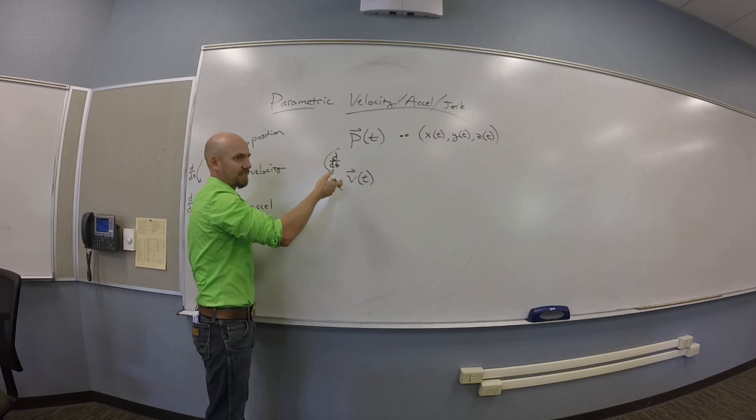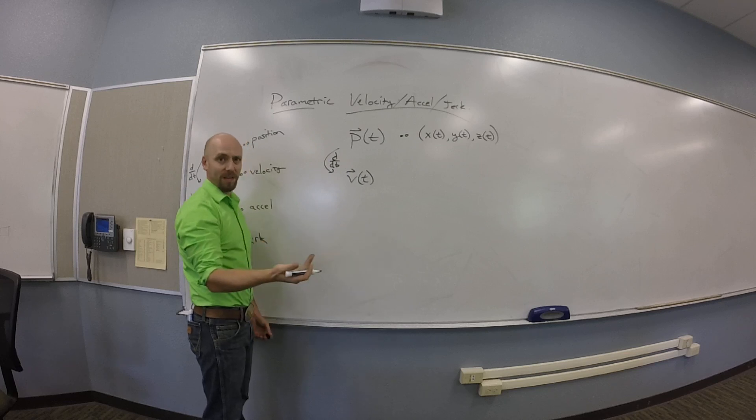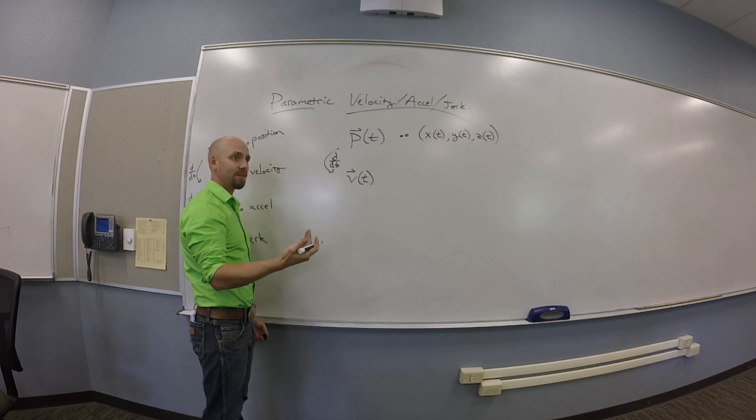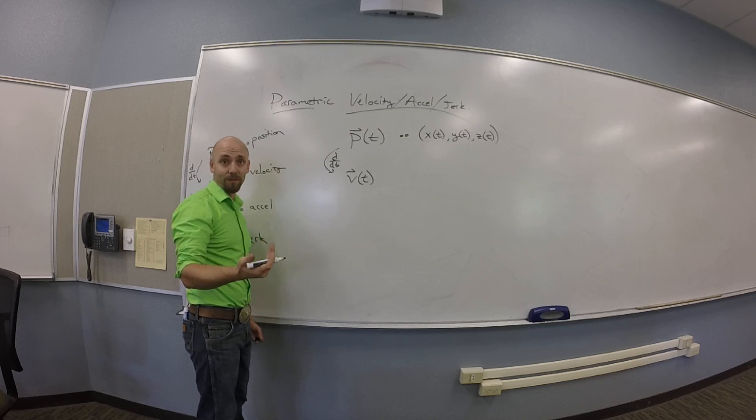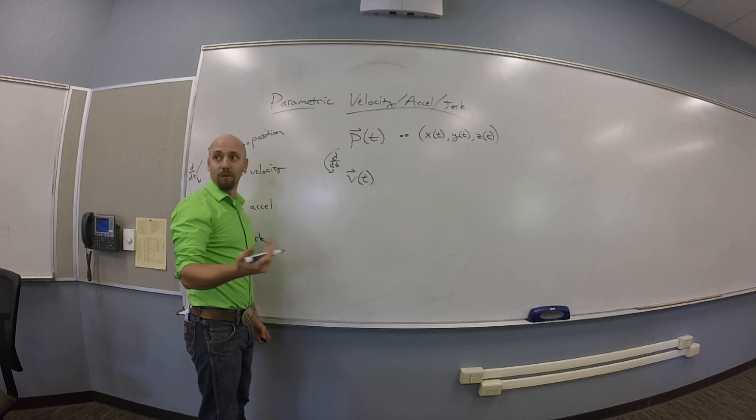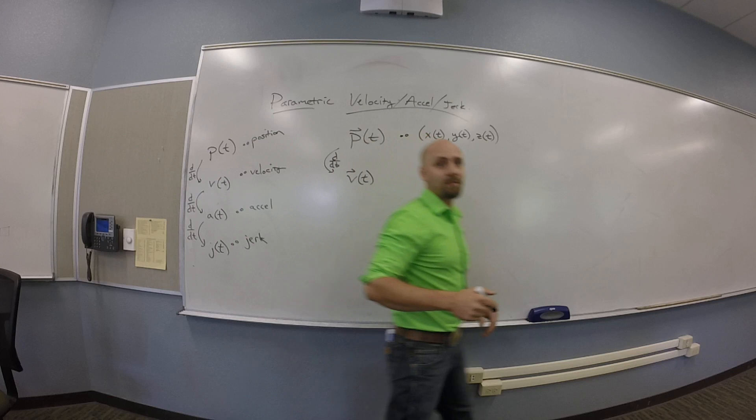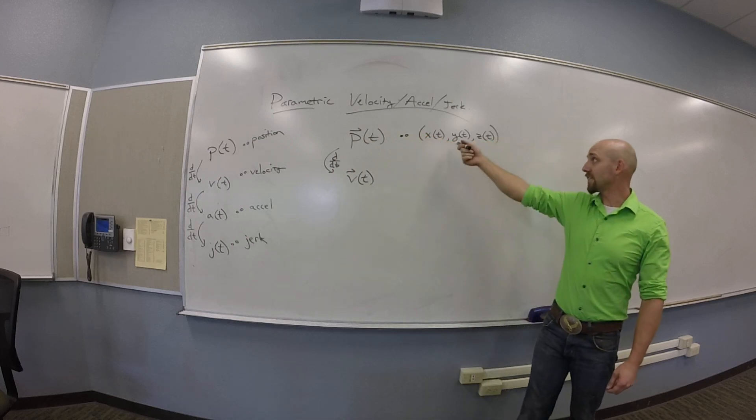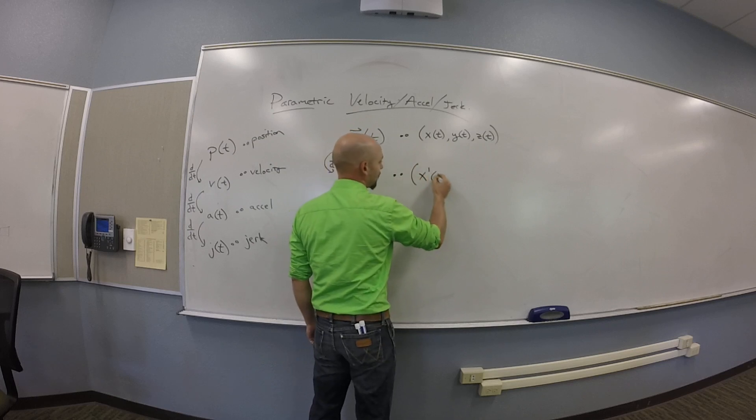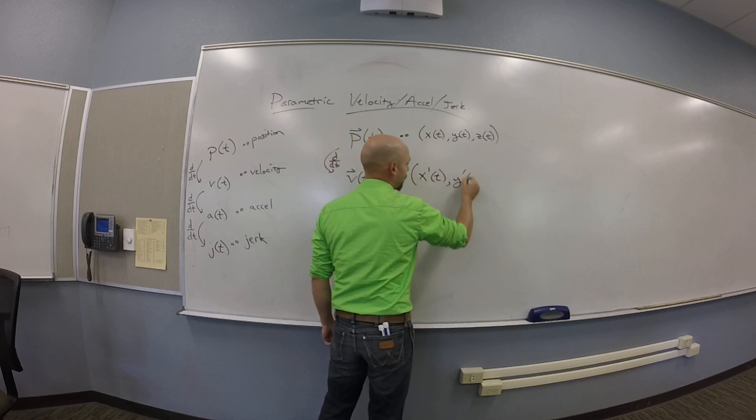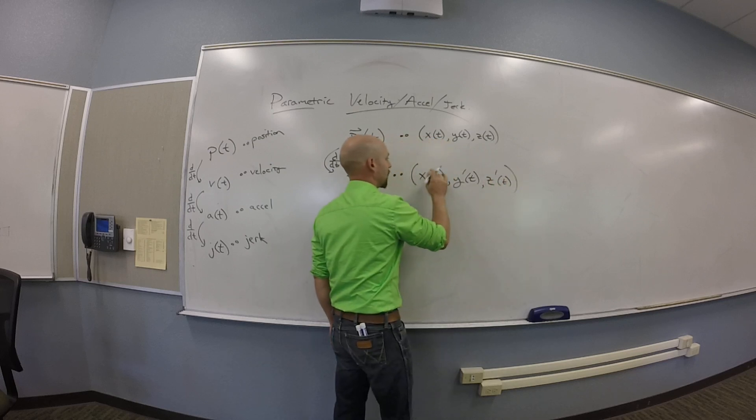I want to hit this sucker with a d dt. It only depends on one variable, so it is a hard derivative. It's not a partial derivative. Maybe we could think to ourselves, we just do x prime of t comma y prime of t comma z prime of t.